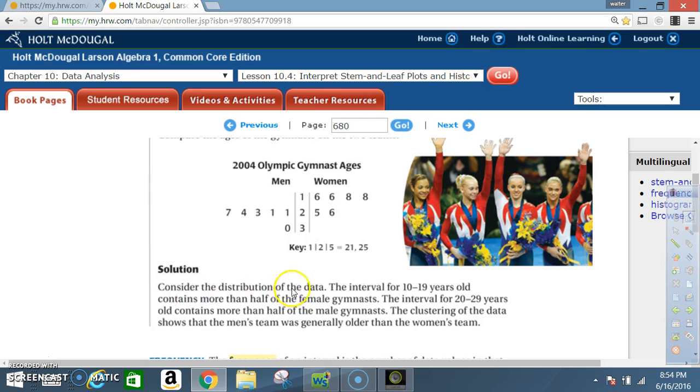Solution: Consider the distribution of the data. The interval for ten to nineteen years old contains more than half of the female gymnasts. The interval for twenty to twenty-nine years old contains more than half of the male gymnasts. The clustering of the data shows that the men's team was generally older than the women's team.